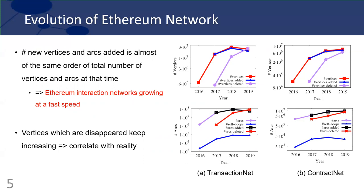The graph size of ContractNet keeps an upward trend over all years, but for TransactionNet, the graph size shrinks a bit. This matches closely with the reality that around the middle of 2019, the Ethereum was considered to offer less features compared to some other new chains, resulting in a number of transactions moving to the new chains. The cost of deploying a contract on Ethereum also rose sharply after the high activity period in 2018, which demotivates developers from using the Ethereum blockchain.